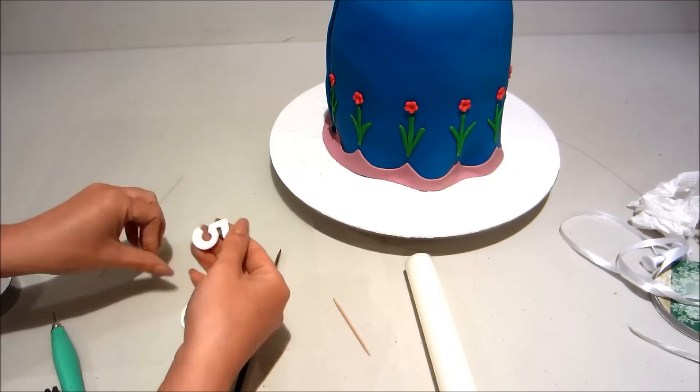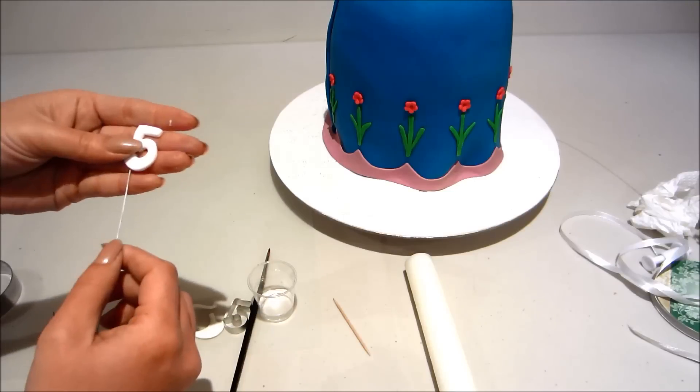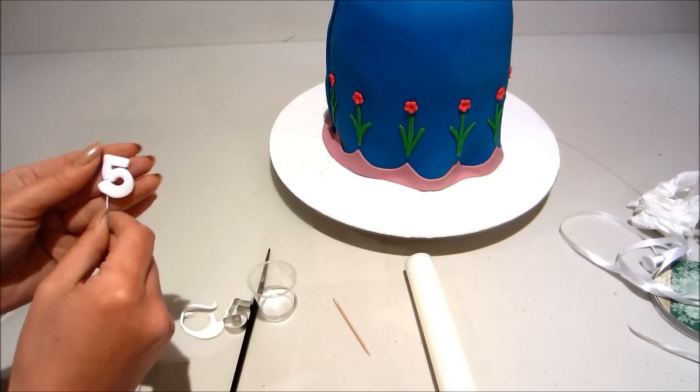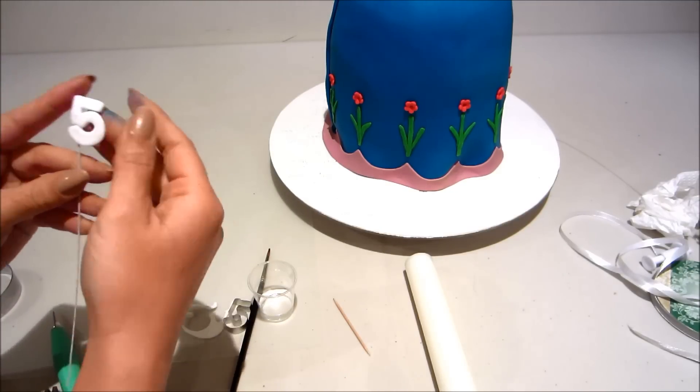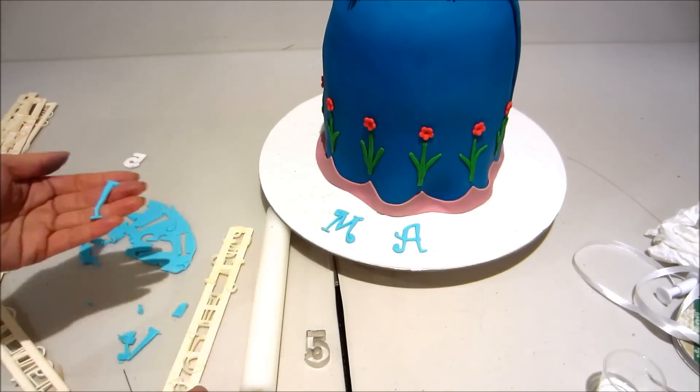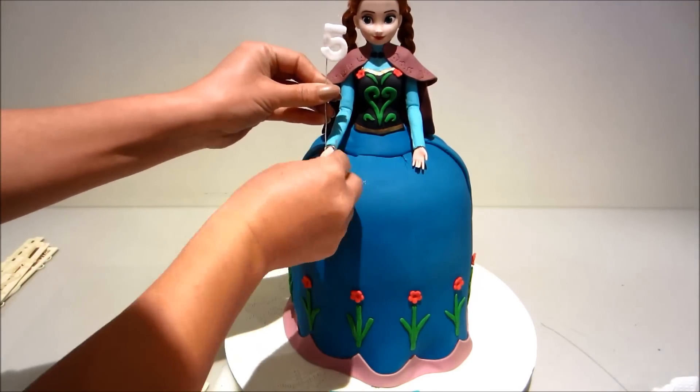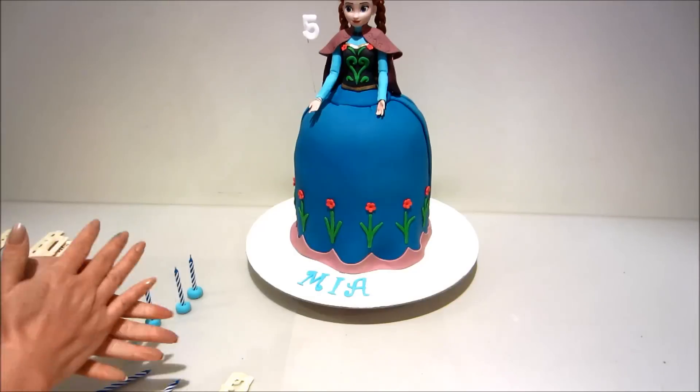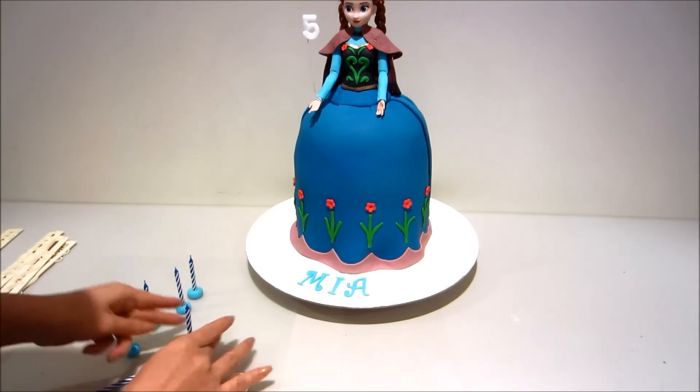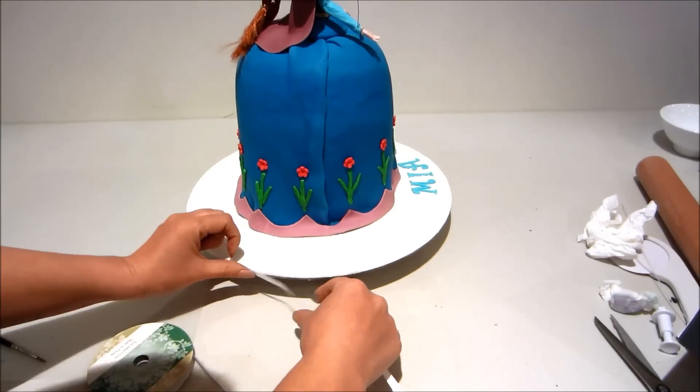Now just making a little floating number five, putting it on some wire and letting it set. Cutting out the birthday girl's name. Now attaching the number onto the doll and placing the candles onto the cake, and adding a ribbon around the cake board.